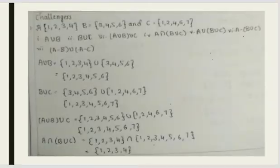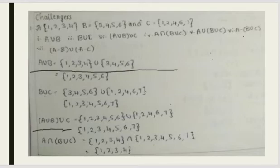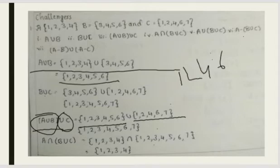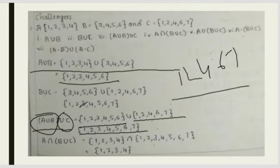Next is (A∪B)∪C. We already solved A∪B, so we just need to union C. Write the answer of A∪B, then write the C numbers: 1, 2, 4, 6, and 7. You will get the answer 1, 2, 3, 4, 5, 6, 7. Since 3 is not in C, we keep it from A∪B; 5 is the only new one, and we write 7 as well.